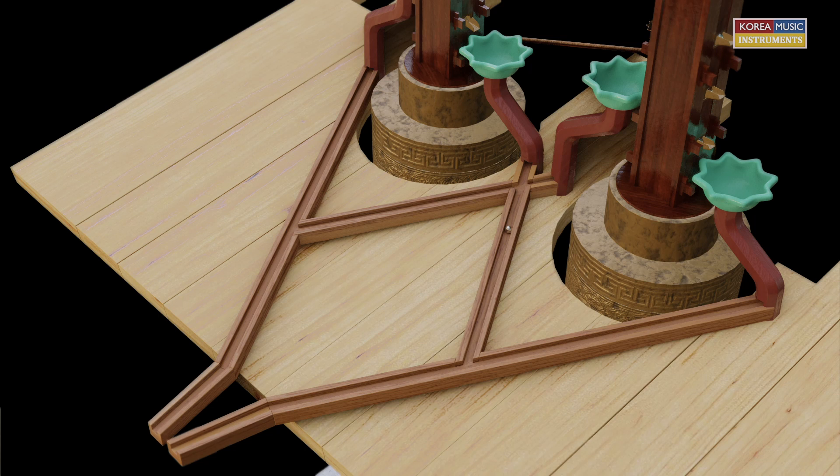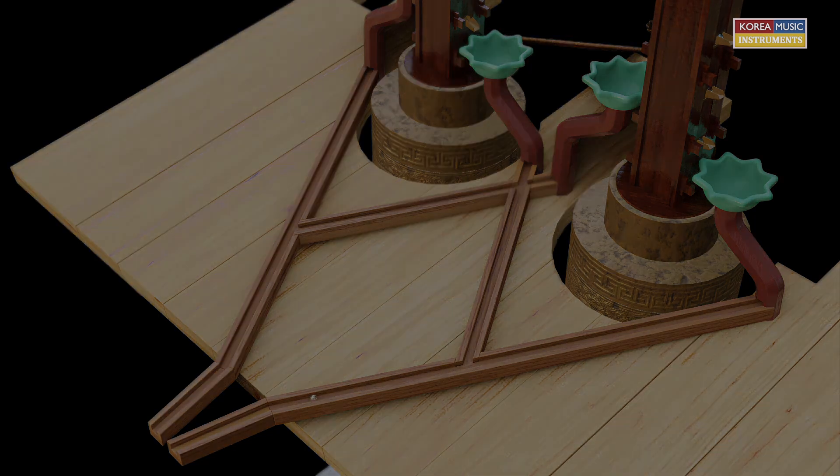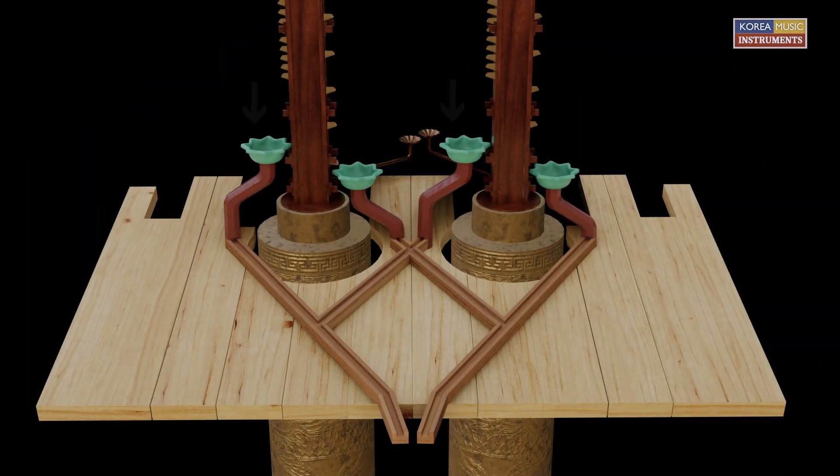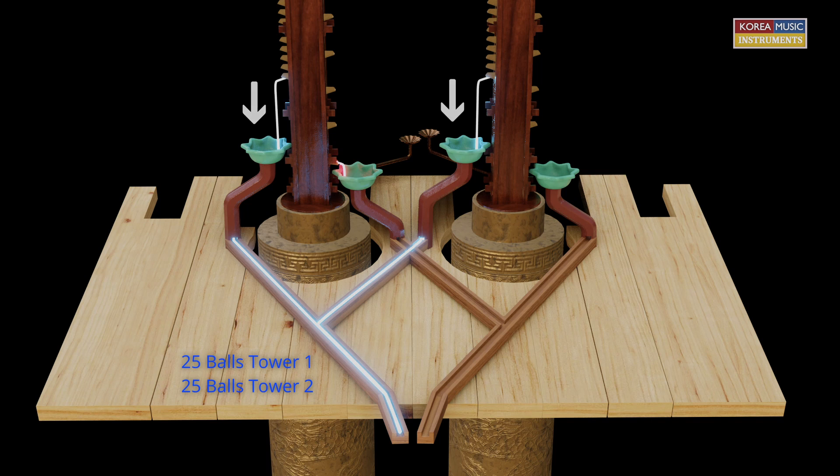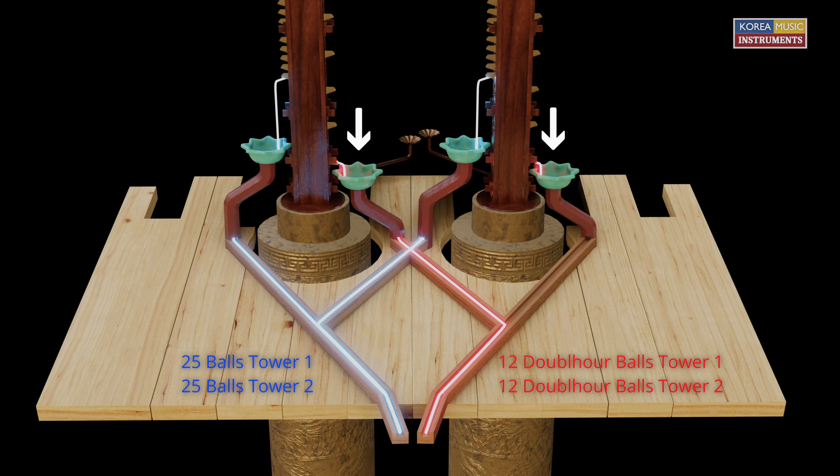Each flower has its own path. The balls from the 25 flaps roll down the left track. When switched to the right tower, the 25 balls from that tower roll down a path in the same lane. The 12 double-hour balls roll down on a path in the right track. When switched to the other tower, these 12 balls also roll down in the right track.